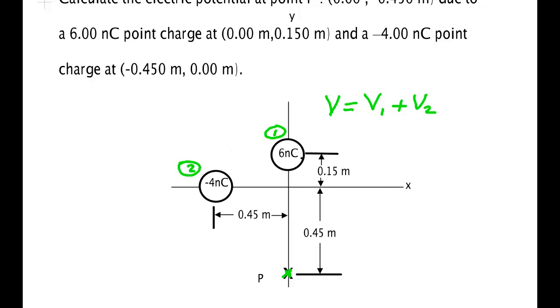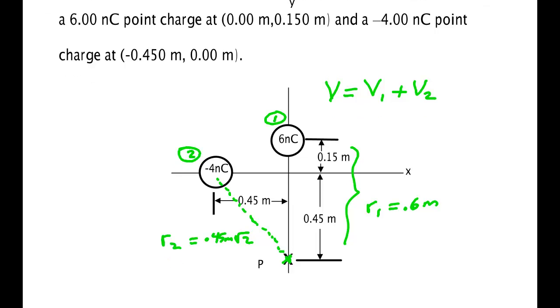Charge one is a six nanocoulomb charge that's located this distance right here, which is 0.6 meters. So this is R1 and it's 0.6 meters. R2 is a little harder. It's this diagonal, and it's an isosceles triangle, so it's going to be 0.45 meters square root of two. That's R2. So I have the Q's, I have the R's. All I have to now is use our formula and sum up the answers.